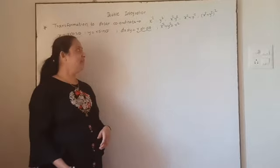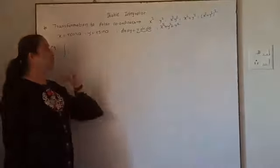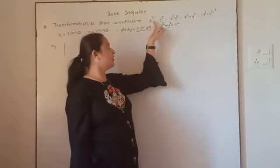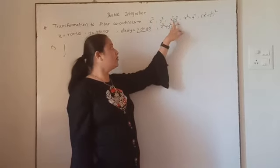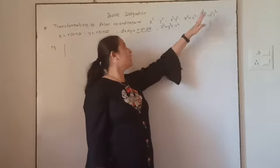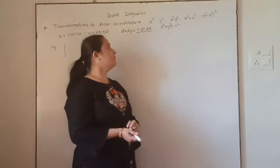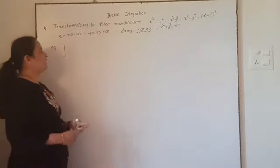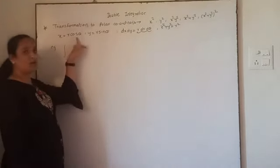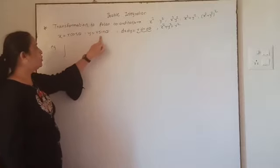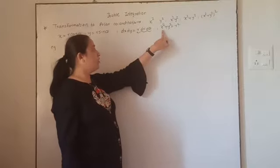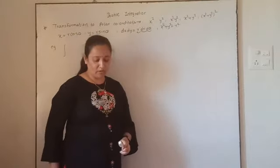Greetings and welcome. Today we will see the topic: transformation to polar coordinates. If you observe that in the integral you have terms like x²y², x²+y², or (x²+y²)², we use the transformation to polar coordinates. We know the relations: x = r cosθ, y = r sinθ, and dx dy = r dr dθ. We will replace x²+y² by r².